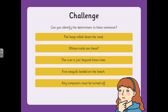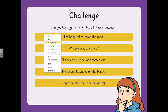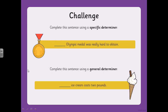Here are a couple of possible answers. You could say 'my Olympic medal was really hard to obtain' for the first one. There are of course more answers than that — if you're unsure, just send a photo through to your teacher and they'll check it for you on Teams. A general determiner could be 'an ice cream costs two pounds'. So I would use 'my' for the first sentence and 'an' for the second one, but there are other options too.